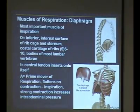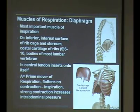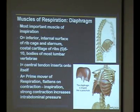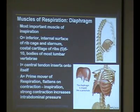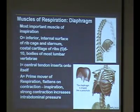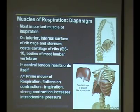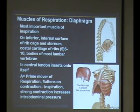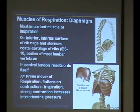The other muscle of respiration — probably the most important one, especially for inspiration — is the diaphragm. When the diaphragm contracts, it moves downward, like a parachute or bowl flattening out. As it contracts down, air gets pulled into the lungs, which is critical for inspiration.